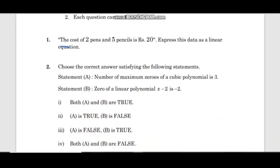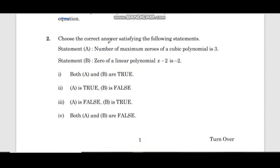Second problem: Choose the correct answer satisfying the following statements. Statement A: Number of maximum zeros of a cubic polynomial is 3. Statement B: Zero of a linear polynomial x minus 2 is minus 2. For zero, x minus 2 equals 0, so x equals 2. Answer A is correct and B is false.